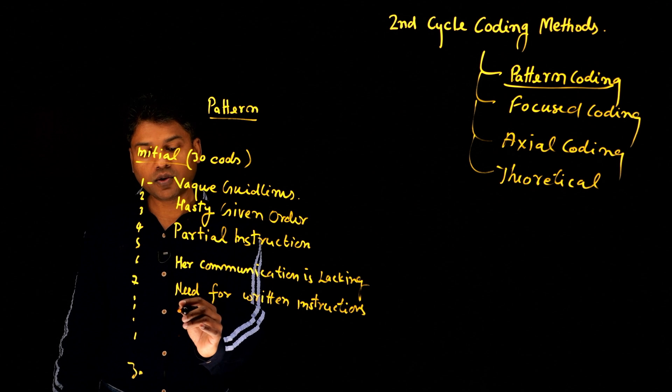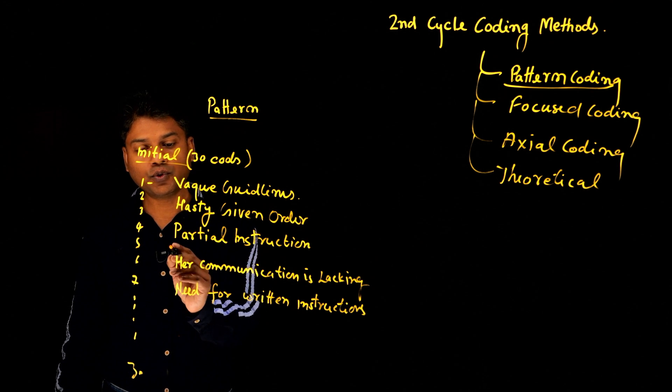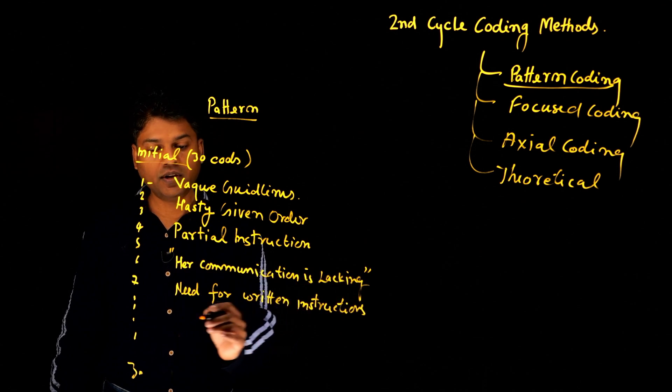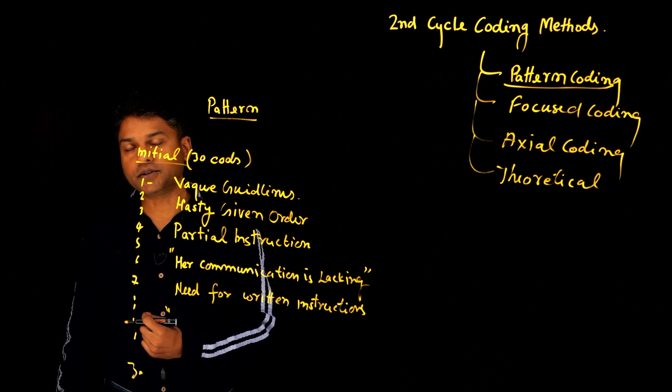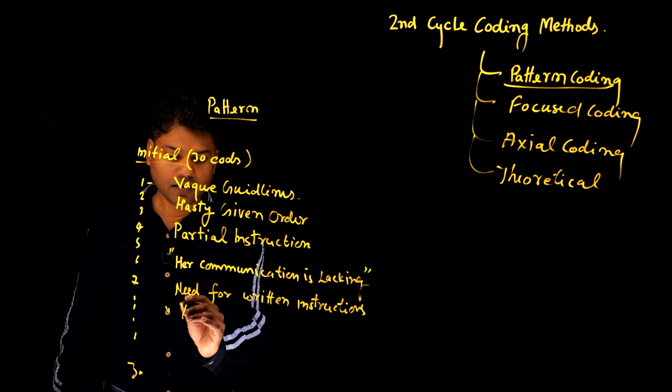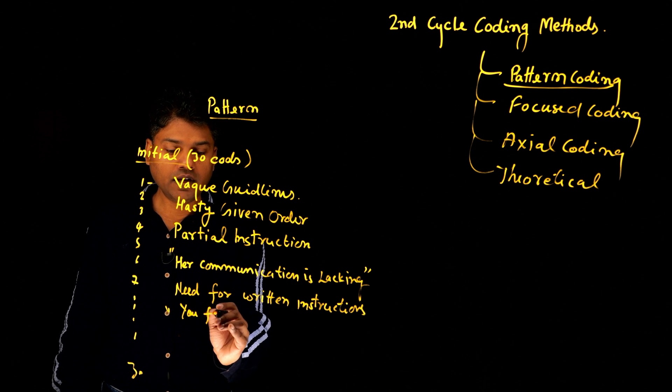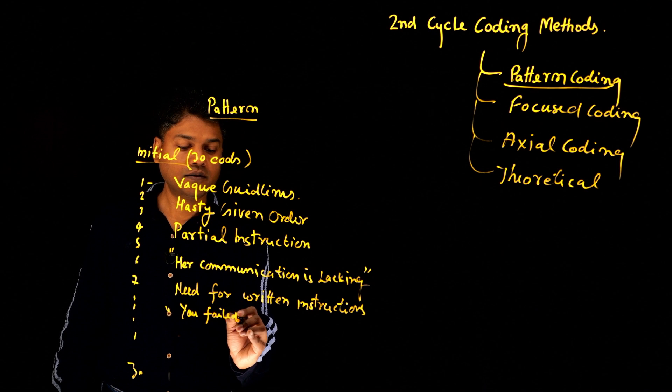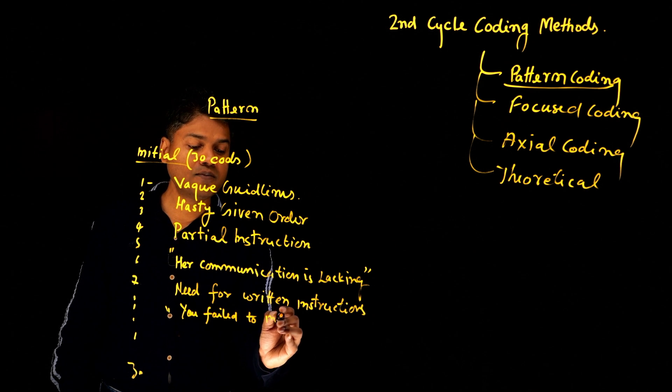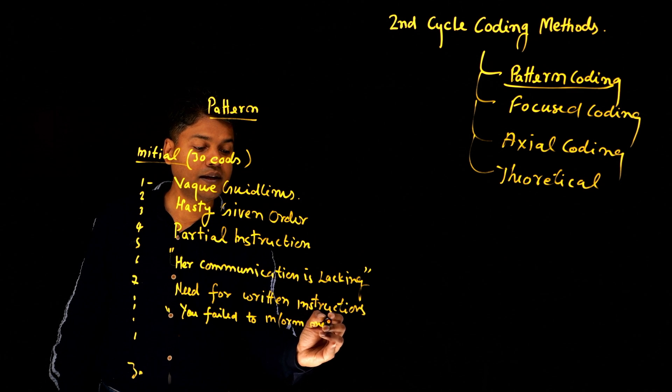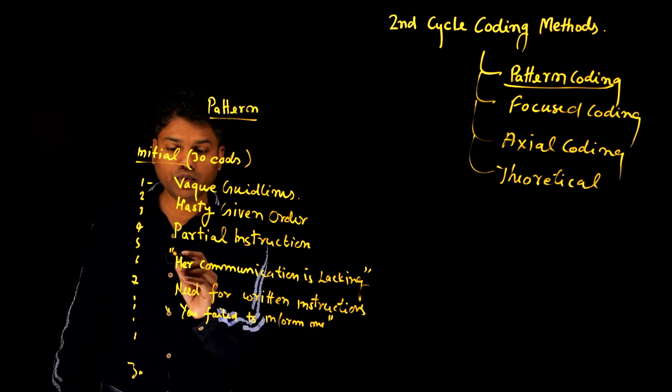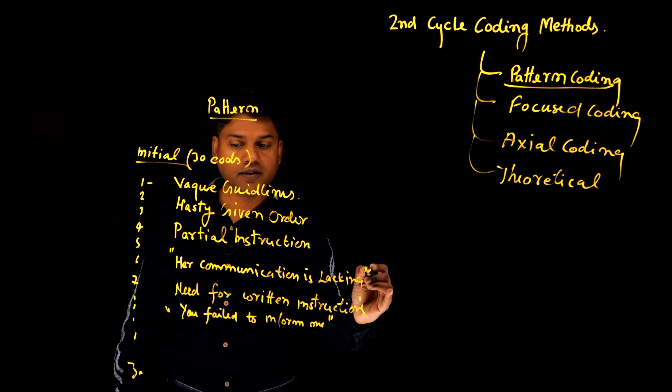And let's say there is another code where, again, in vivo code, which is more like a direct statement from the participant. And it says, you failed to inform me. Another in vivo code. That's why I put it in inverted comma.